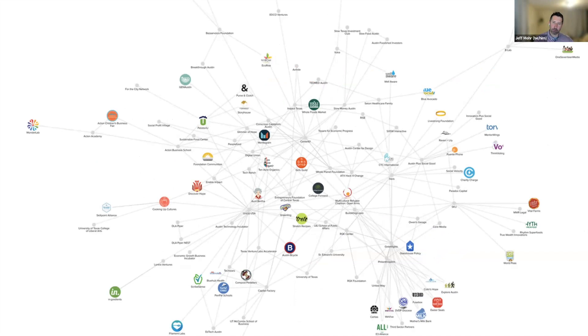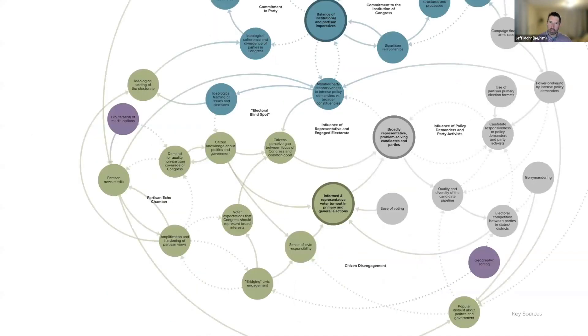This is a more zoomed in picture of what we mean when we say a causal loop diagram or systems map. The circles on this map in this case are things like partisan news media or amplification and hardening of partisan views. So it's a very different type of map. It shares the same similar underpinnings of how do we understand relationships among these different factors, and the overall visual might look the same, but it's a very different type of map that people are ending up trying to create.